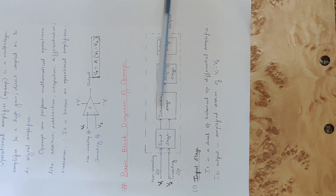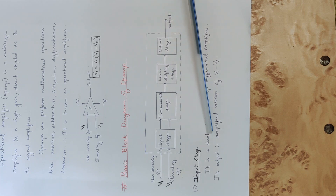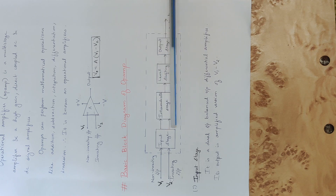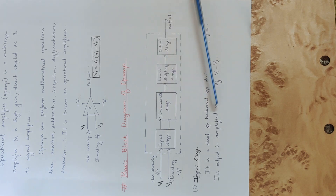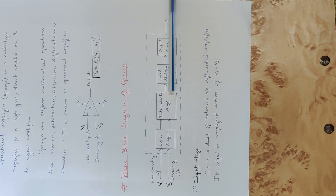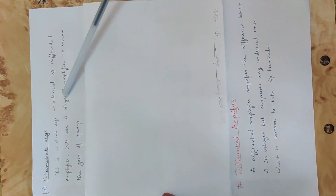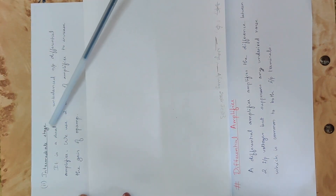The Intermediate Stage comes after the input stage. The reason we use the intermediate stage is to increase the gain of the Op Amp. Since Op Amp is a multi-stage amplifier, we use this additional amplifier stage to increase the overall gain.